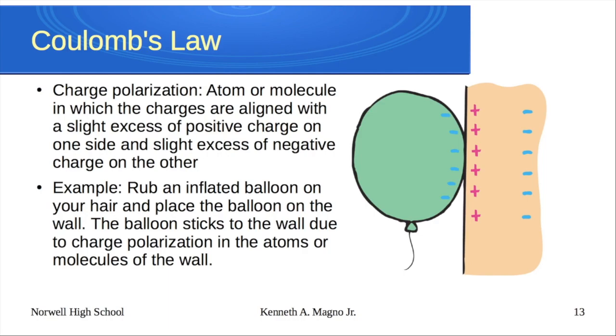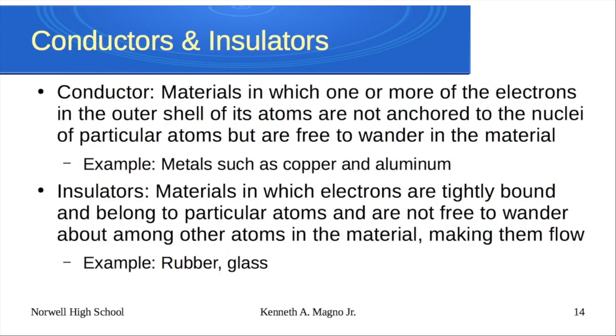Most of these charges need to flow in a material. So you either have a conductor or an insulator primarily. A conductor is a material in which one or more of those electrons in the outer shell, remember we talked about outer valence shells in chemistry, is not very well anchored to the nucleus. So this is mostly metal, things like copper, aluminum, gold, silver. Those outer electrons are kind of free to move. They'll pass along within the material. They become conducting electrons very easily.